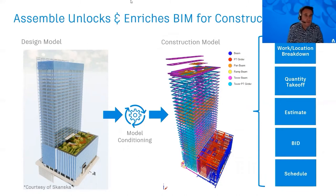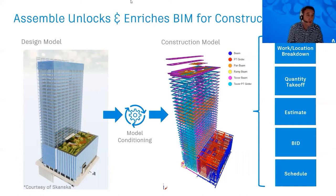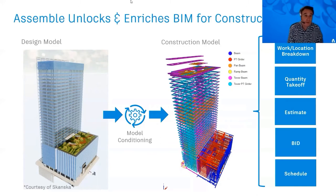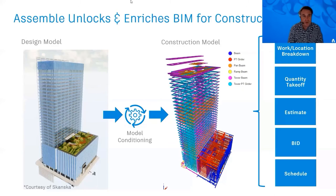Those design models may not represent the way you're actually going to tender or physically build the project. Your structural model might need splitting between a groundworks contractor, a concrete contractor, and a steel fabricator. MEP might involve separate contractors for air handling units versus electrical. Assemble takes that already-measured geometry and breaks it down into different sections, allowing you to add additional data — for example, an NRM cost code — colorize the data, and make it available to the site team in different tender or construction packages.